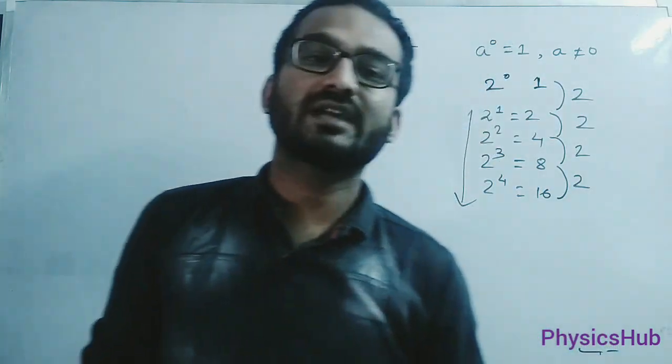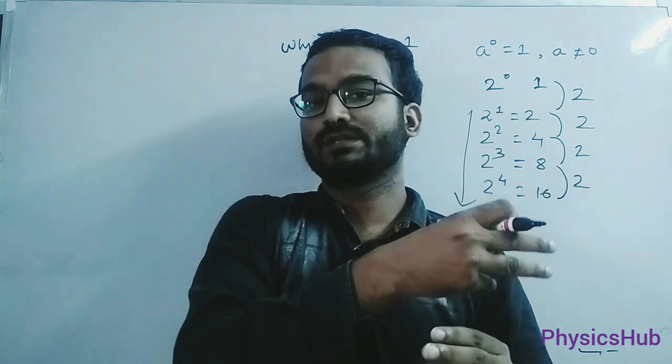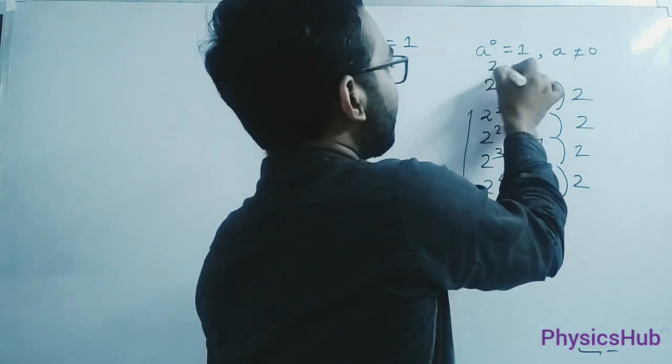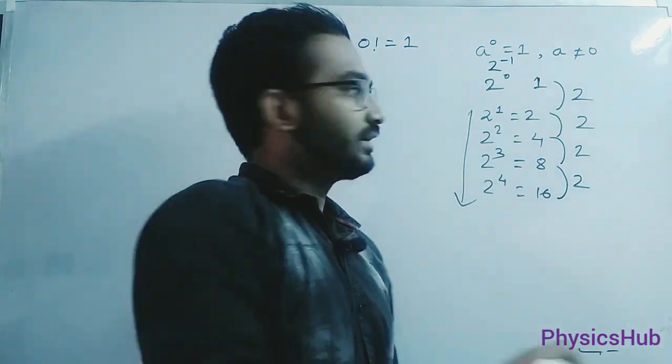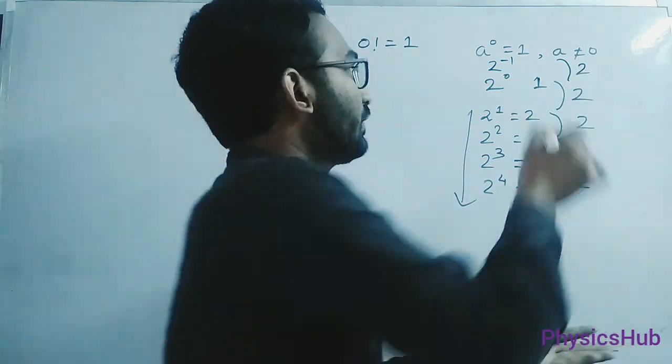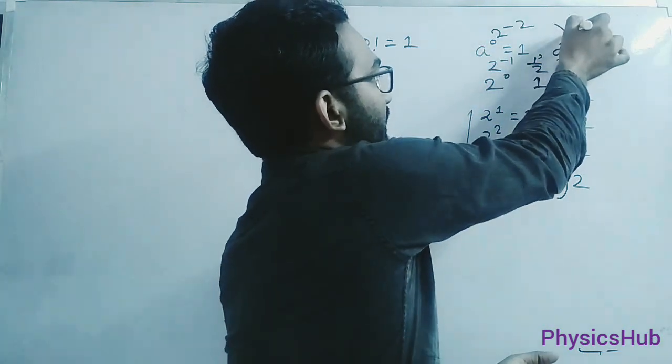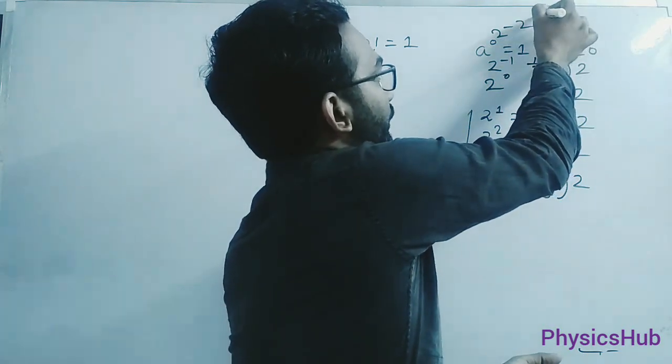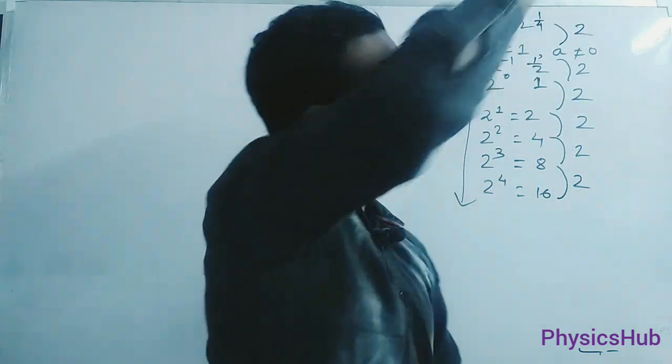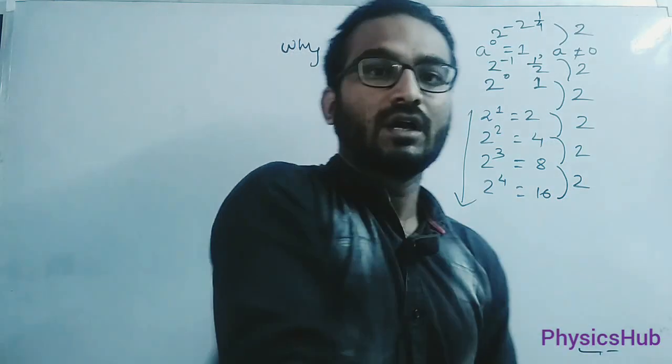And there is no restriction that if we can go forward, we cannot go backward. So in the same way, we can find out 2 to the power minus 1. And the result of division will be 2 again. Then what will be the value? Half. Similarly, 2 to the power minus 2, and the result will be 2. In this way we can understand it.